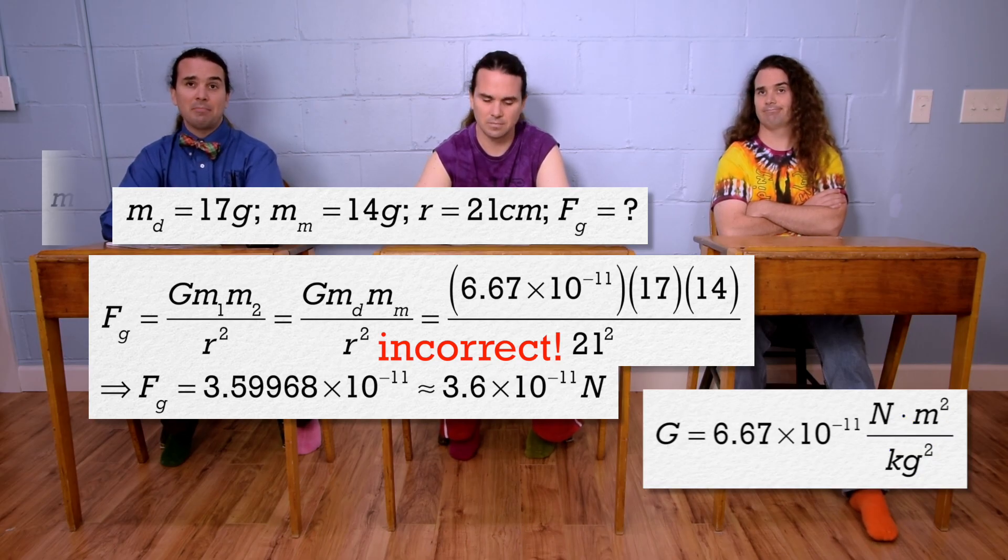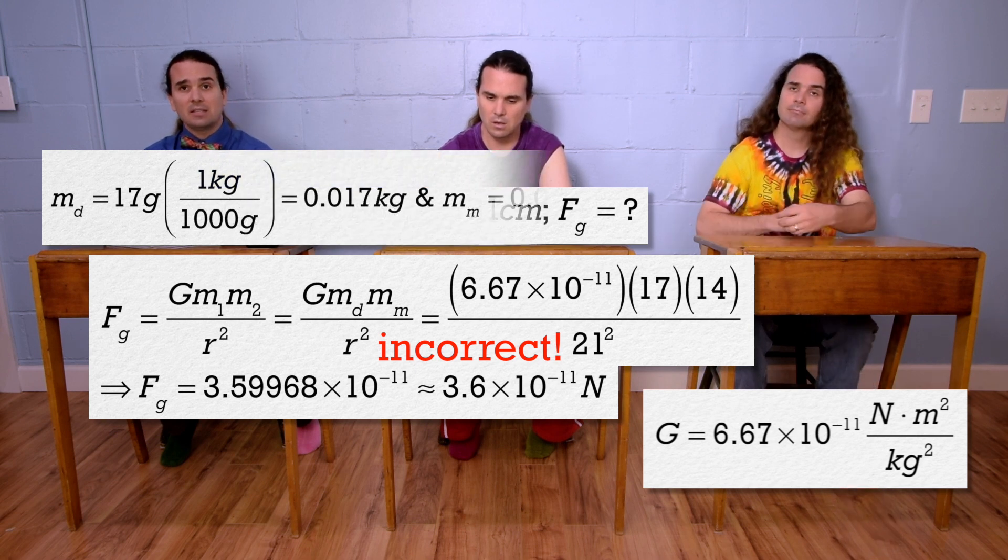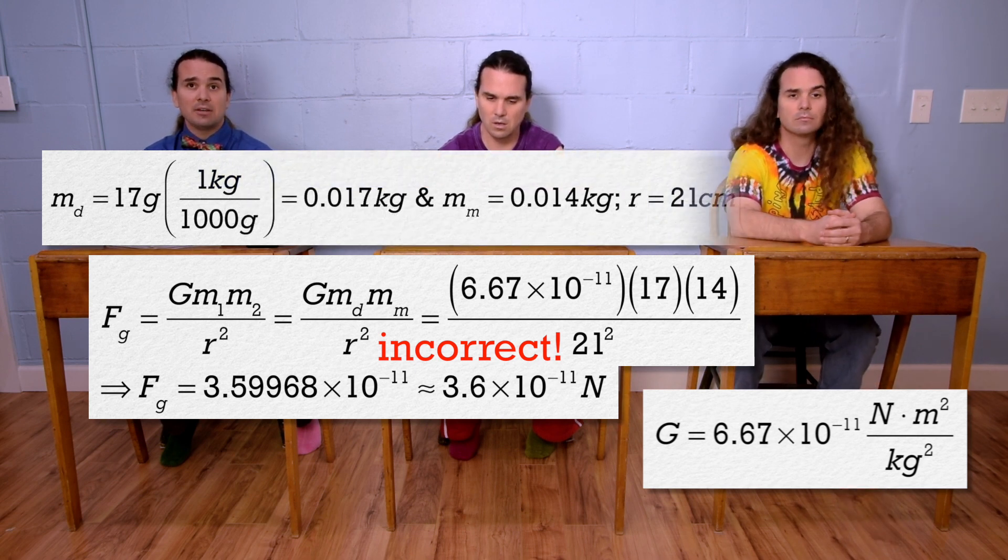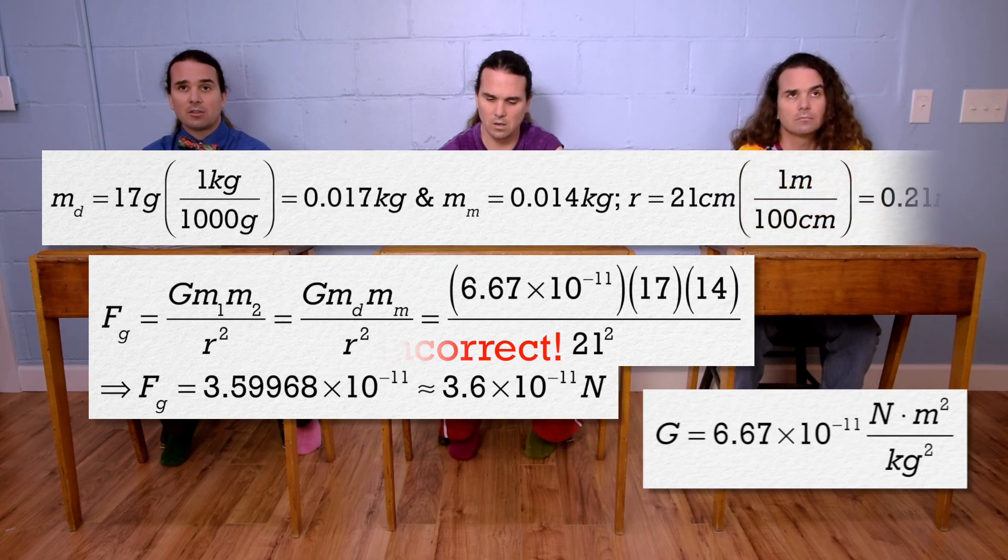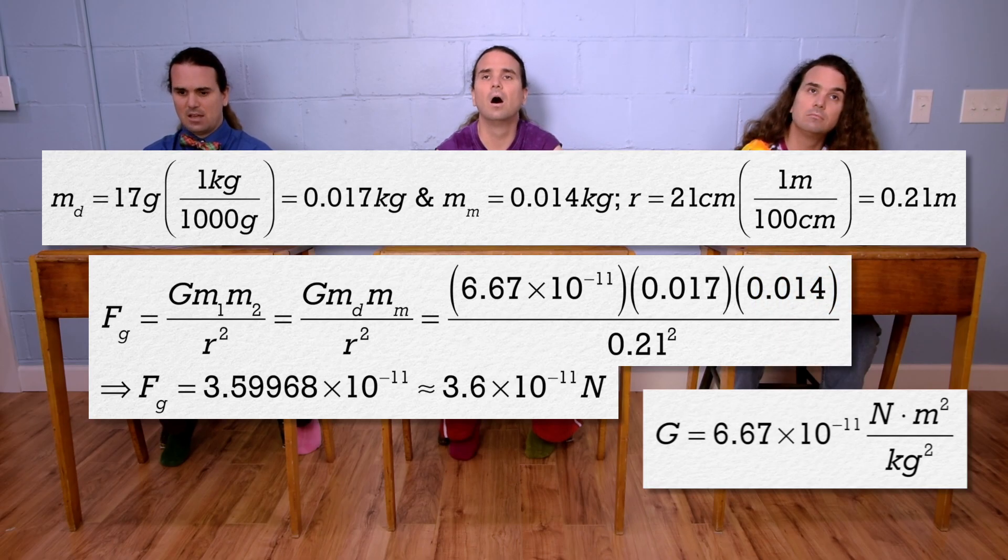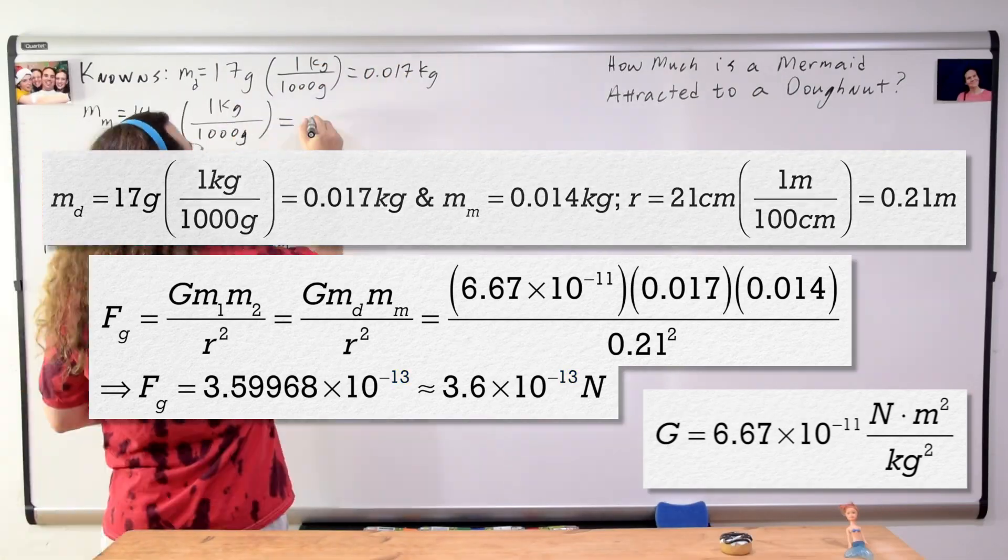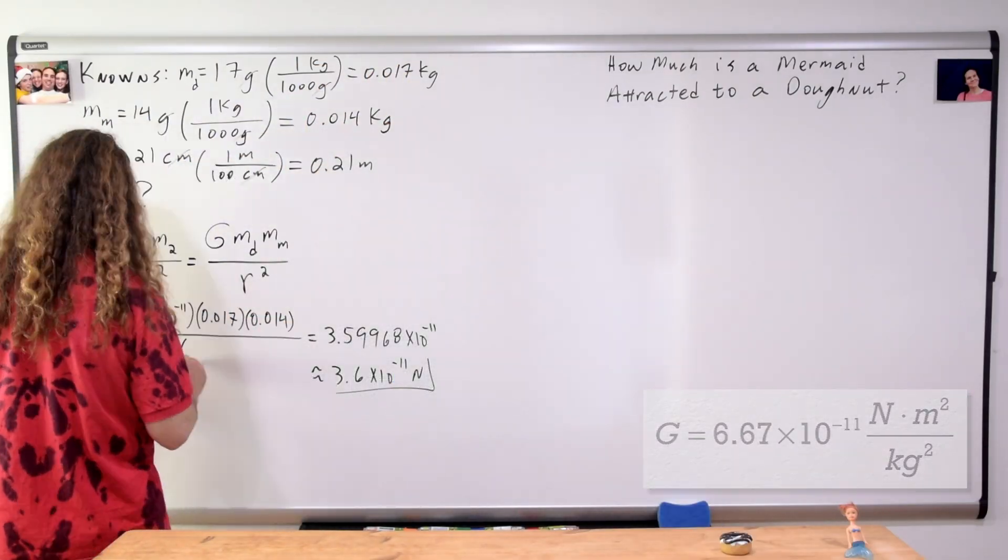So, if we multiply both masses times one kilogram over a thousand grams to convert to kilograms and multiply the distance by one meter over a hundred centimeters to convert to meters and plug those new values into Newton's universal law of gravitation, we get, just give me a second, 3.59968 times 10 to the negative 13 or 3.6 times 10 to the negative 13 Newtons with two significant digits. Correct.